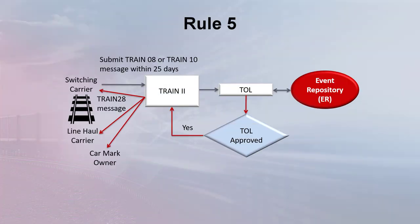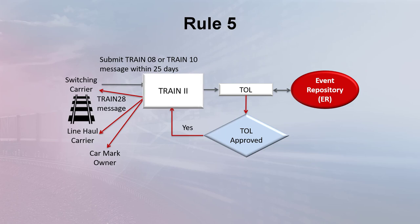In order to get CarHire relief on cars handled in switching service, carriers must transmit the proper electronic messages to Railink. A Train 08 or Train 10 message must be submitted by the switching carrier to Railink within 25 days of the switch. The Train 2 manual defines the proper information and format for creating the message and contains specific examples of the dates and times to be used in the TOL process. As a general rule, the end of the TOL time is identified and a start time is calculated based on switch type.